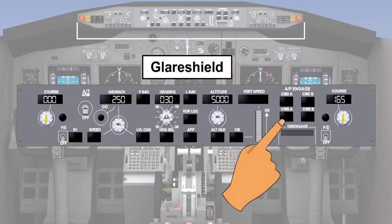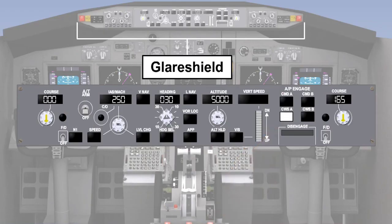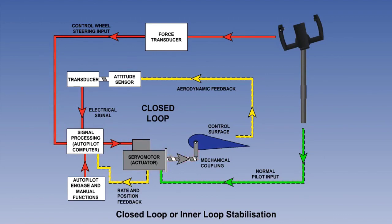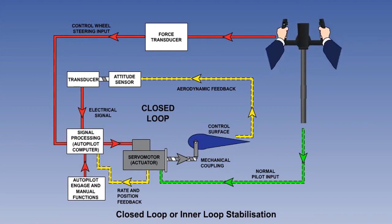If the autopilot is engaged in control wheel steering mode, using the control wheel steering button on the MCP, then the pilot can use normal control forces on the control column to fly the aircraft with the autopilot engaged. The system achieves this by using a force transducer to convert a manual input to an electrical signal that the autopilot computer uses. The signal then goes through the autopilot's normal inner loop to move the control surface via the servo motor. Once the aeroplane achieves the new attitude, the pilot completes the feedback loop, releases the input and the autopilot maintains this new stabilised attitude.